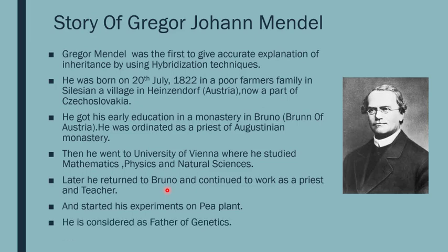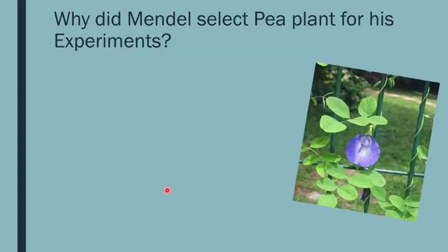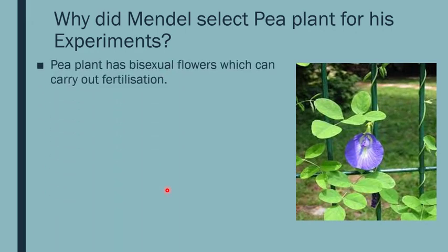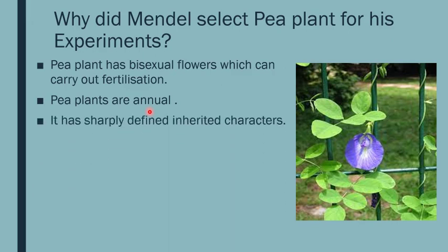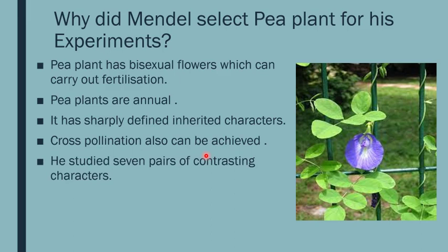He is considered the father of genetics. Mendel selected the pea plant because it has bisexual flowers with both essential floral whorls — androecium and gynoecium — so it can carry out self-fertilization. Pea plants are annual, so more than three crops could be obtained in a year. They have sharply defined inherited characters, cross-pollination could be achieved easily, and he studied seven pairs of contrasting characters.